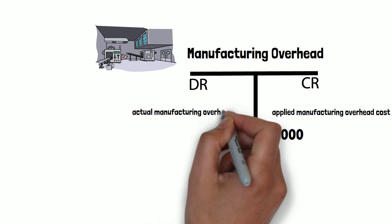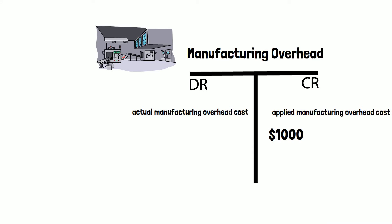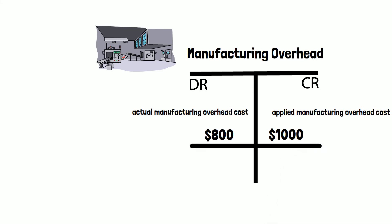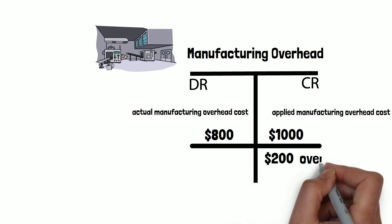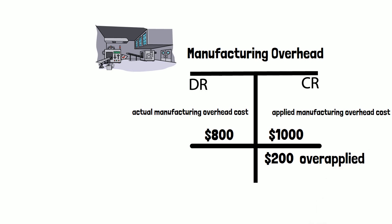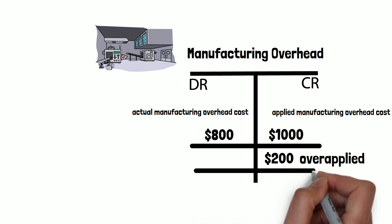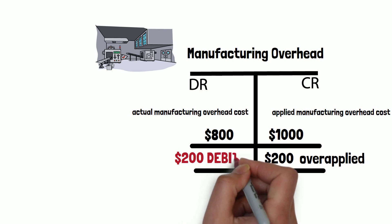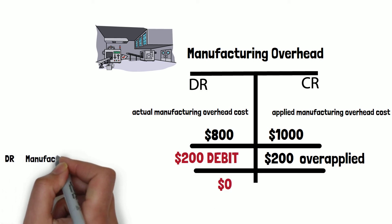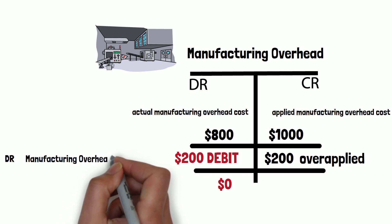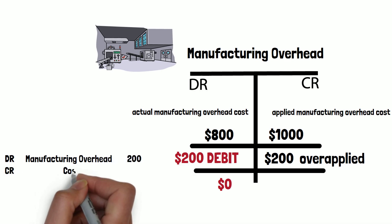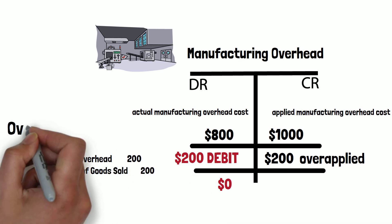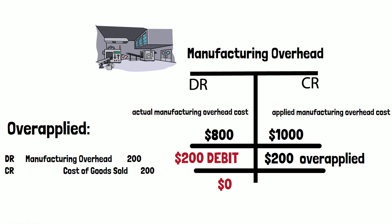At the end of the year, we realize that the actual manufacturing overhead cost accumulated is eight hundred dollars. The applied is one thousand and the actual is eight hundred, so we actually over-applied two hundred dollars. The balance should be zero because this account is a clearing account. Therefore, we have to debit two hundred dollars to manufacturing overhead and credit cost of goods sold for two hundred dollars. This is the situation of over-applied.